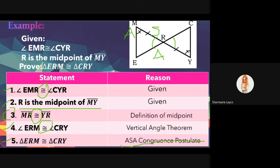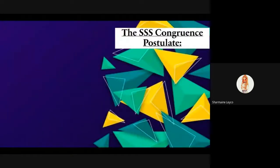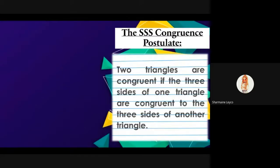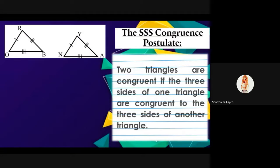Let us proceed to the SSS congruence postulate. Two triangles are congruent if the three sides of one triangle are congruent to the three sides of another triangle. Given triangle ROB and triangle YNA — let us identify the three corresponding sides.